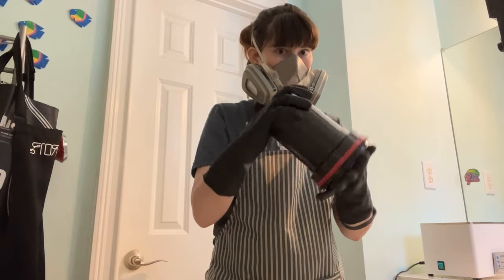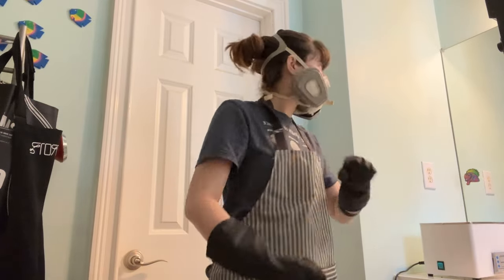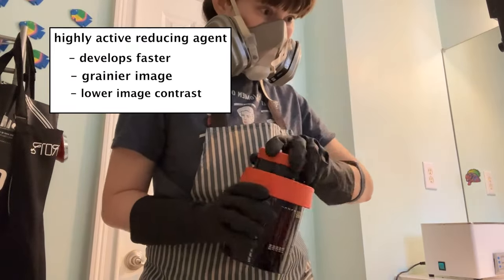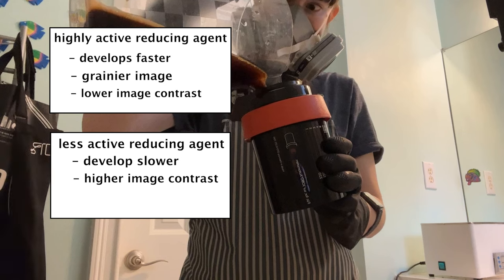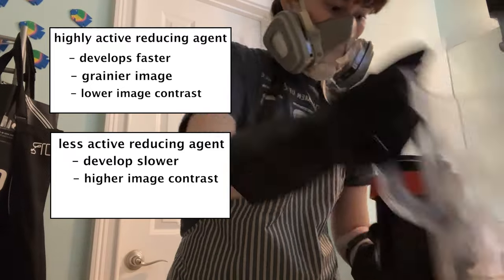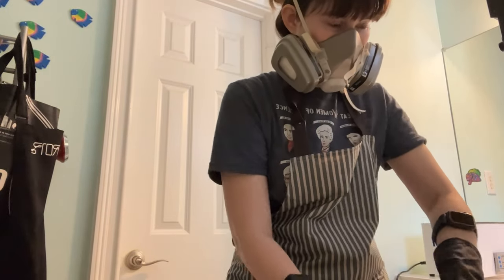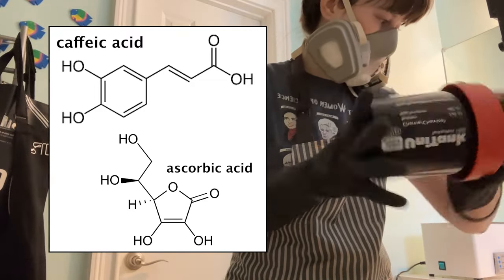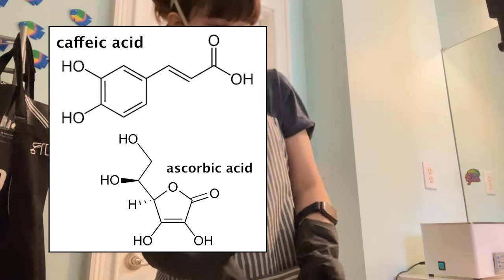Commercial developers will often contain more than one reducing agent because different reducing agents affect development time and image results. Something that reduces very fast — a highly active reducing agent — can cause more grain and lower image contrast between the blacks and whites. However, something that reduces slowly takes a lot longer to develop but can increase image contrast, meaning the whites are more white and the blacks are more black. Combining a highly active reducing agent with a less active one can result in a middle-ground development time and image quality. In this case, the reducing agent from the coffee is caffeic acid, and we're using vitamin C powder as a second reducing agent.